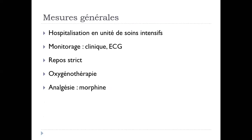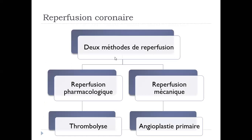La prise en charge thérapeutique. Diagnostic fait : hospitalisation en unité de soins intensifs, monitorage, ECG, oxygénothérapie sans attendre. Le patient doit bénéficier d'un traitement antithrombotique comprenant du clopidogrel 600 mg, de l'aspirine 250 mg, et un traitement anticoagulant : héparine ou HBPM, sans attendre. Diagnostic posé, le patient reçoit un traitement antithrombotique.